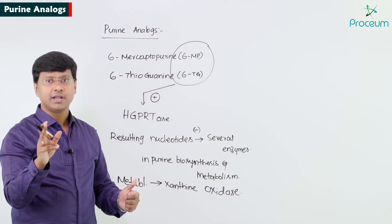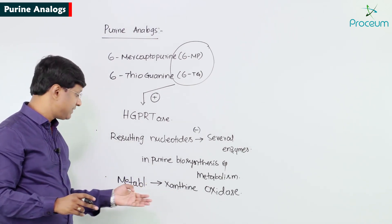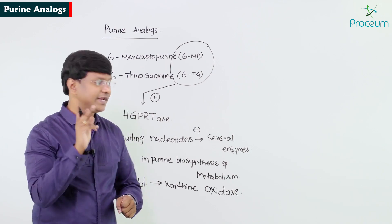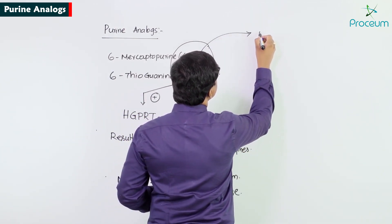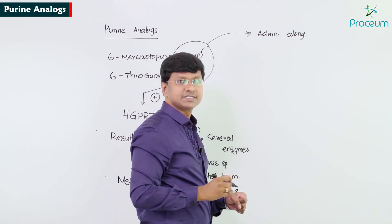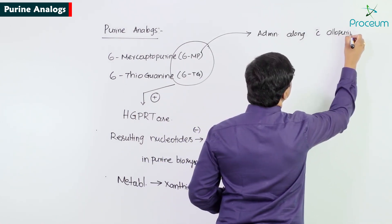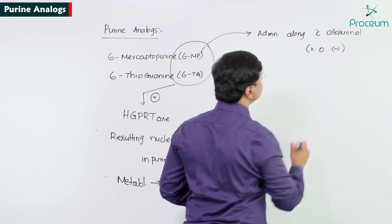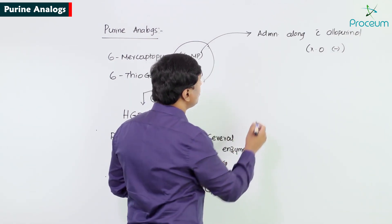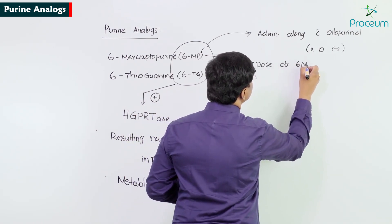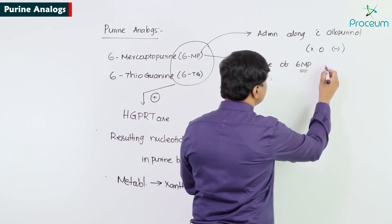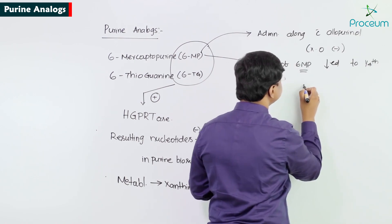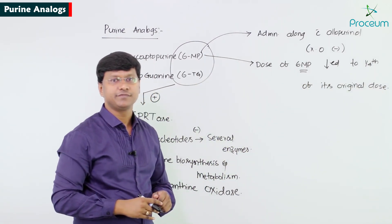When allopurinol is given together with 6-mercaptopurine, allopurinol inhibits xanthine oxidase, causing the levels of 6-mercaptopurine to increase. Therefore, when 6-mercaptopurine is administered along with allopurinol, the dose of 6-mercaptopurine should be reduced to one-fourth of its original dose.